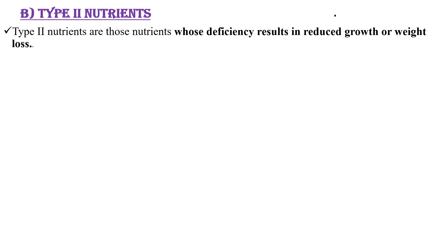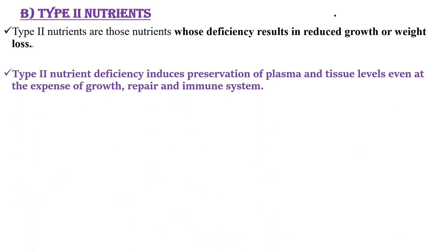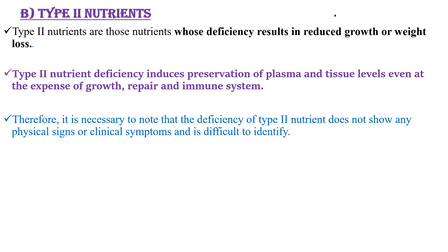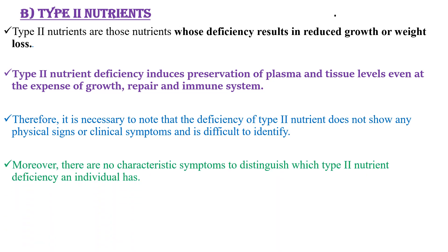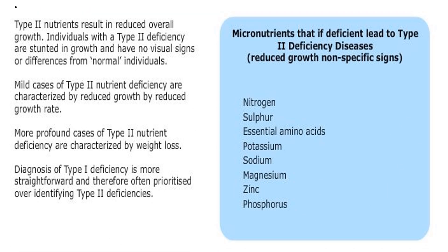Type 2 nutrients are those whose deficiency results in reduced growth or weight loss. Type 2 nutrient deficiency induces preservation of plasma and tissue levels even at the expense of growth and repairing the immune system. It is necessary to note that the deficiency of type 2 nutrients does not show any physical sign or clinical symptoms and is difficult to identify. Moreover, there are no characteristic symptoms to distinguish which type 2 nutrient deficiency an individual has. Individuals with type 2 deficiency are stunted in growth but have no visual signs or difference from normal individuals.